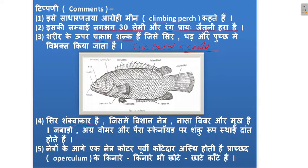The body shape is shankvakaar (conical/spindle-shaped). The nostrils are shown in the diagram of the mouth area — they must be located and distinguished from the mouth.